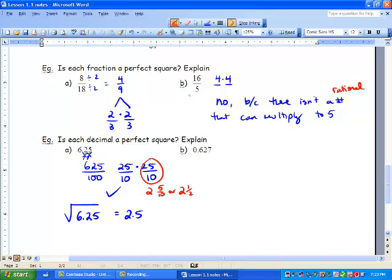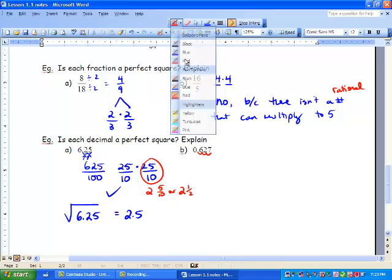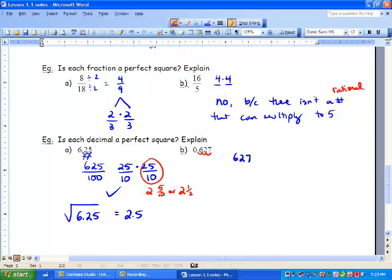Next, we're going to ask ourselves, is 0.627 a perfect square? Well, we have three decimal spots that we need to move. And we're going to get 627 over 1,000. And we ask ourselves, is 1,000 a perfect square? It is not. One number cannot multiply by itself to get to 1,000, a rational number. And nor can 627 be. So neither can be written as a product of a single number.